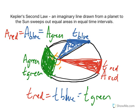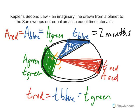So we have Kepler's second law: an imaginary line drawn from a planet to the sun sweeps out equal areas in equal time intervals. Say the hypothetical time is two months. The two months it took to traverse the blue part of the orbit is the same two months to traverse the green part, and the same two months to traverse the red part. But the red arc is much shorter than the blue, which is much shorter than the green — because the areas are the same.